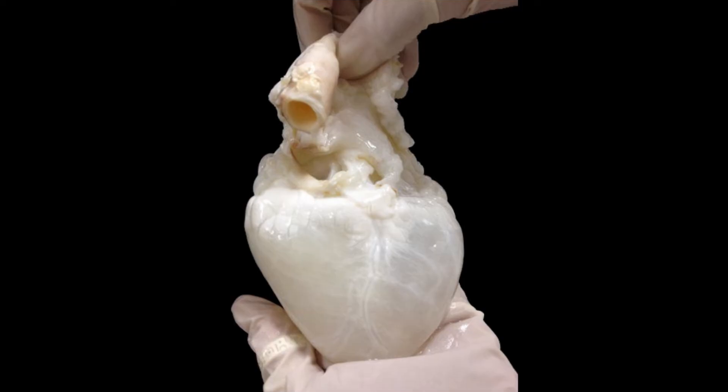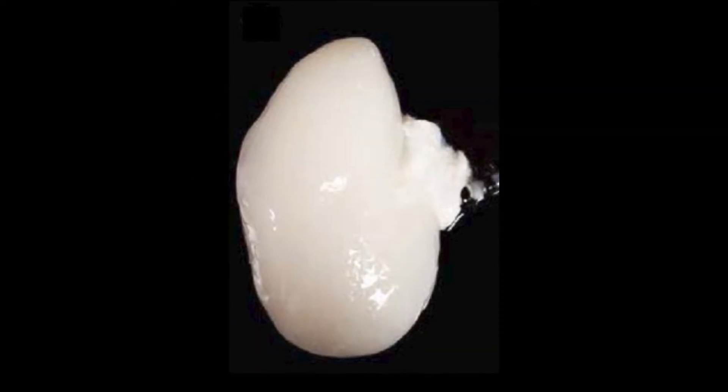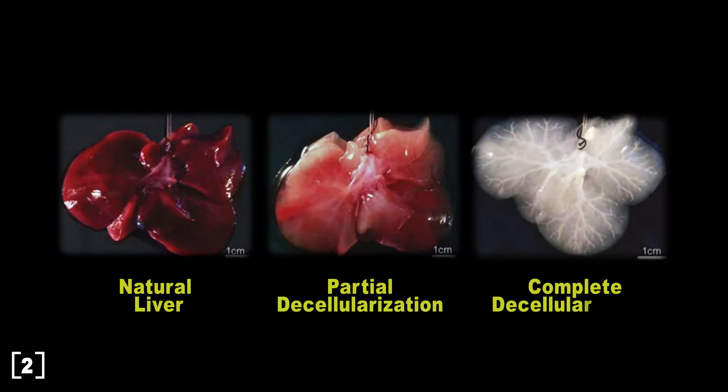This is a ghost heart that would help with immune rejection. We can also find different ghost organs such as livers and kidneys. The name ghost comes from its distinct color difference from a real organ as it appears white in color.